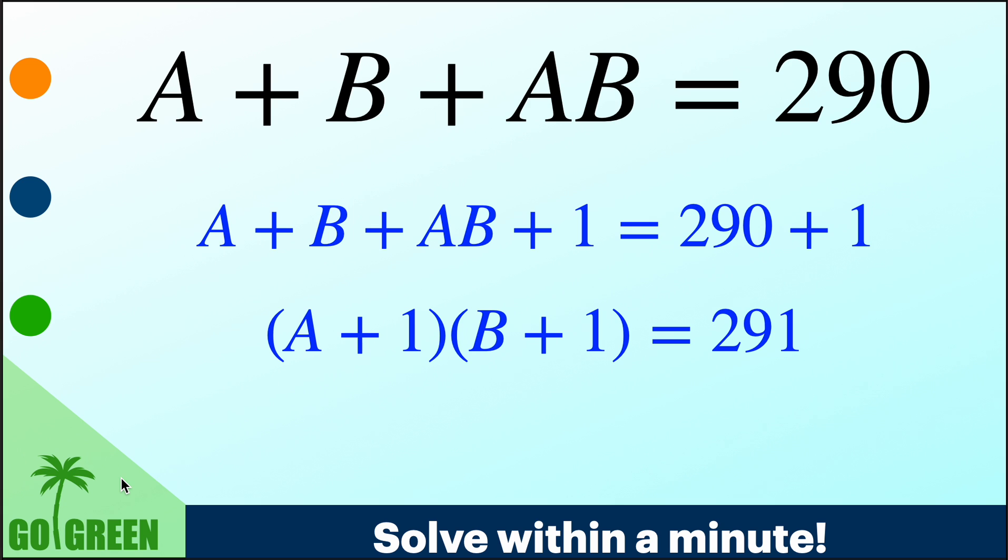So one case we have discarded because if A plus 1 is 1 or B plus 1 is 1, then A, B will be 0. So A, B, 0 case we cannot expect. We cannot, we have seen actually why A and B, 0 will not give a solution.